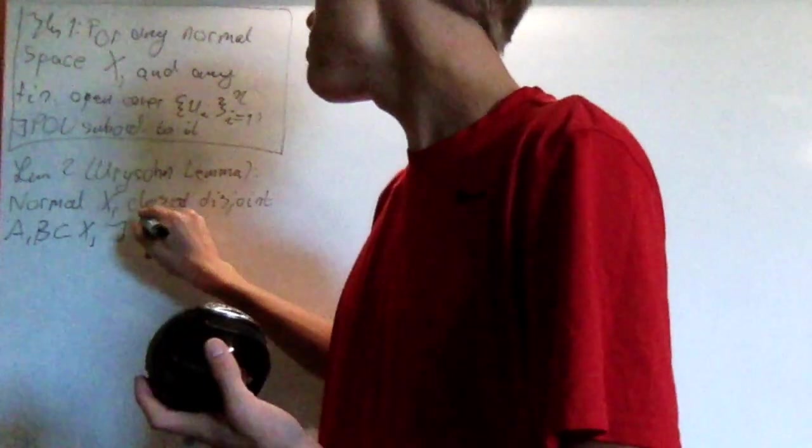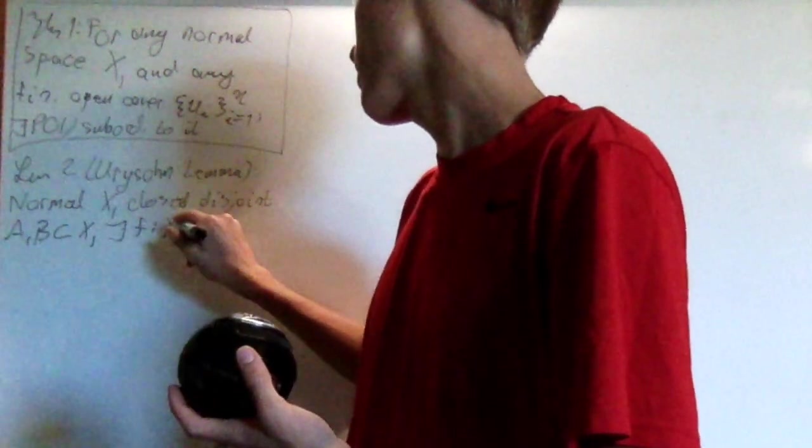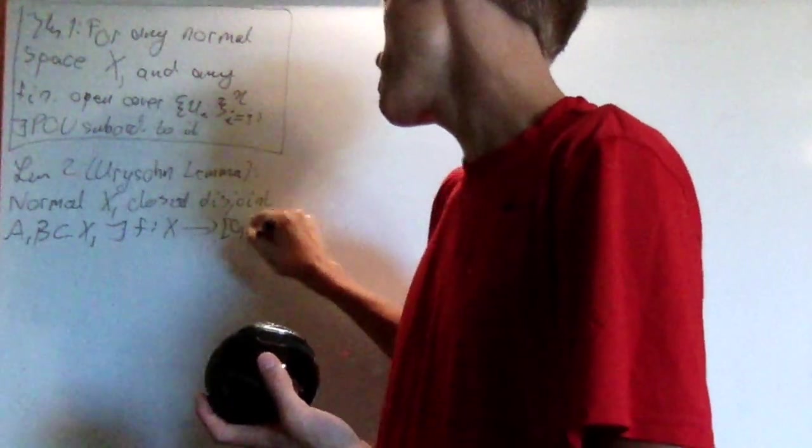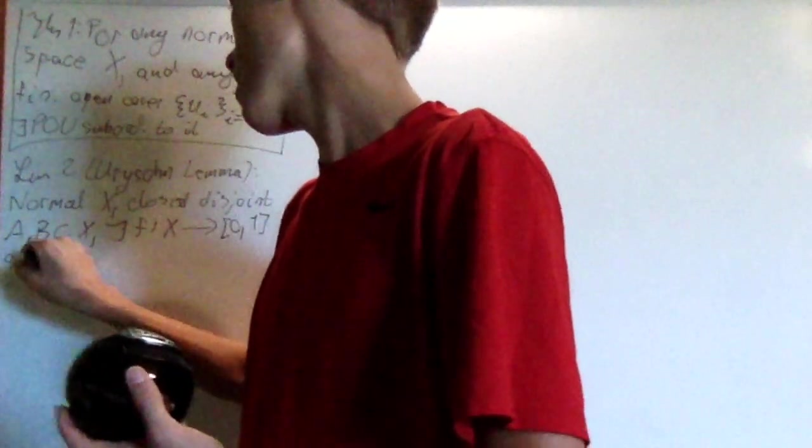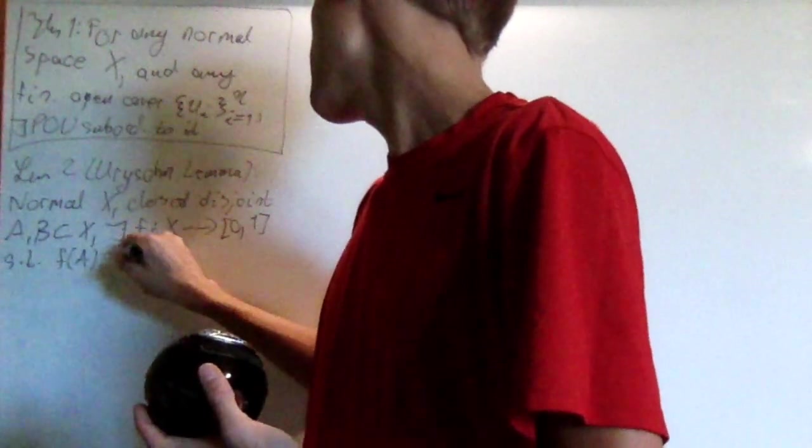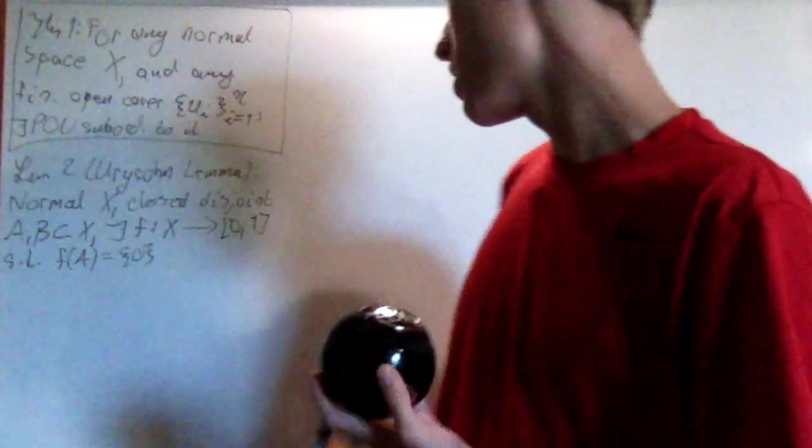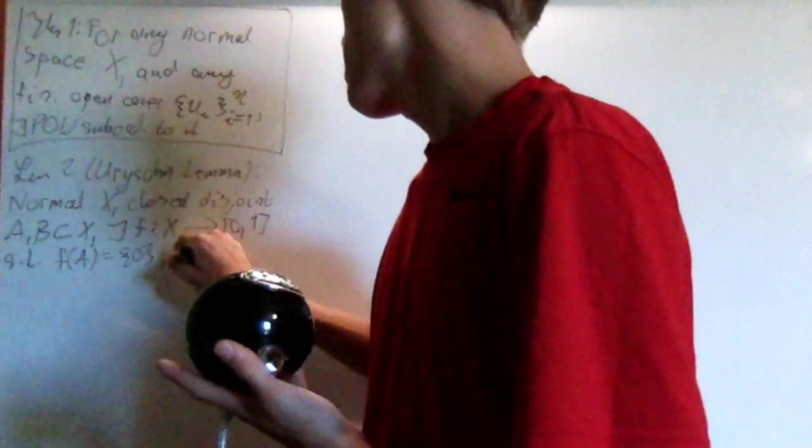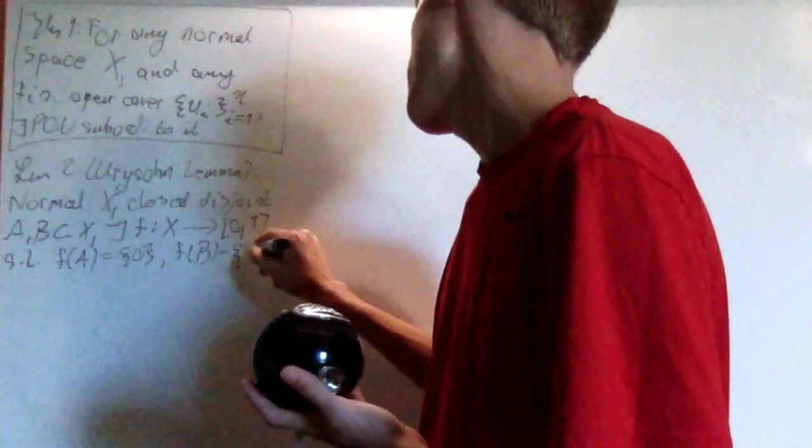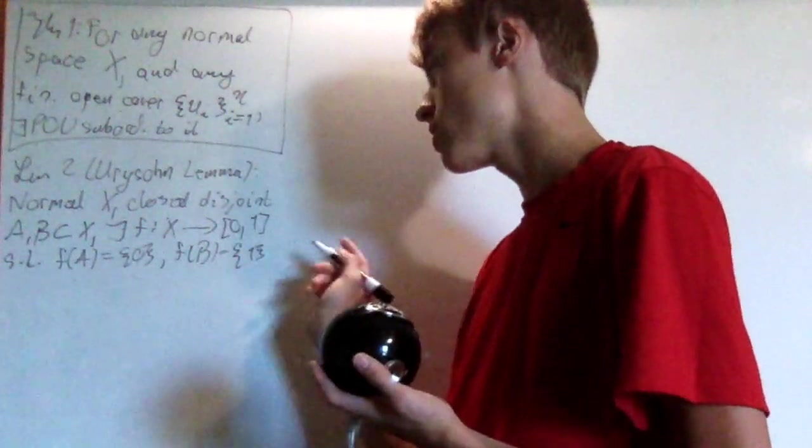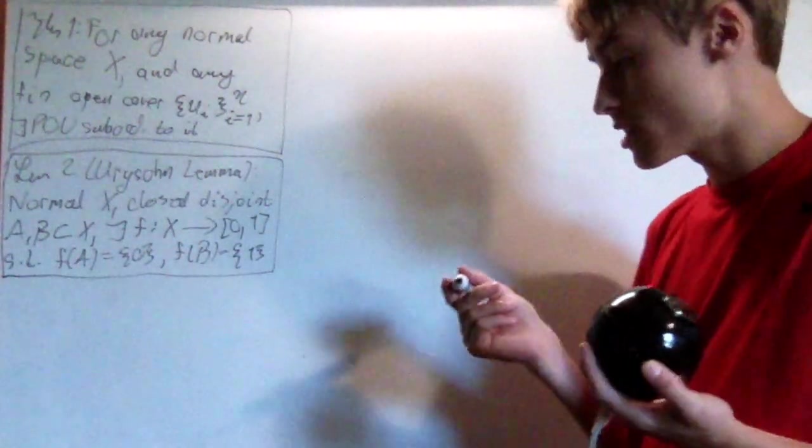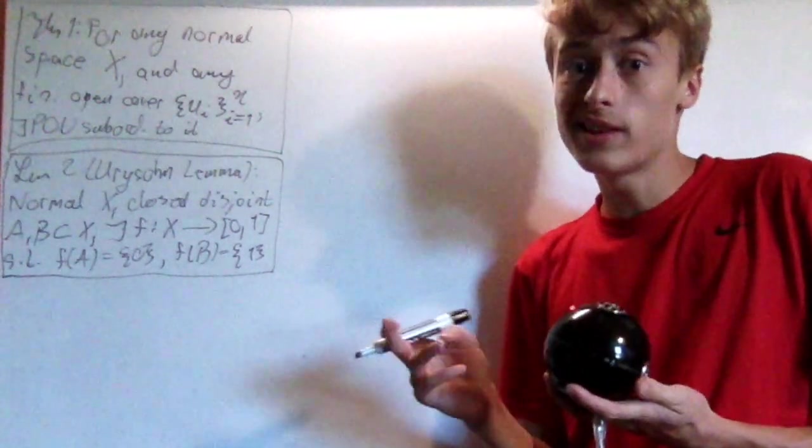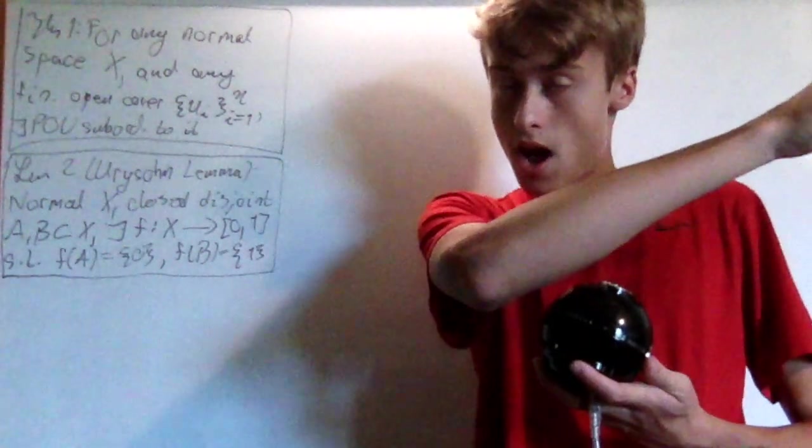Then there exists a continuous function f from x down to 0, 1, such that f of a is 0. So for every point in a, the f of a is 0. And then f of b is 1, so every point in b goes to 1. That's the Uri-san lemma. This is actually one of the most important lemmas in topology. I don't have a video on it, but I will make one, and it will be iCard up there.